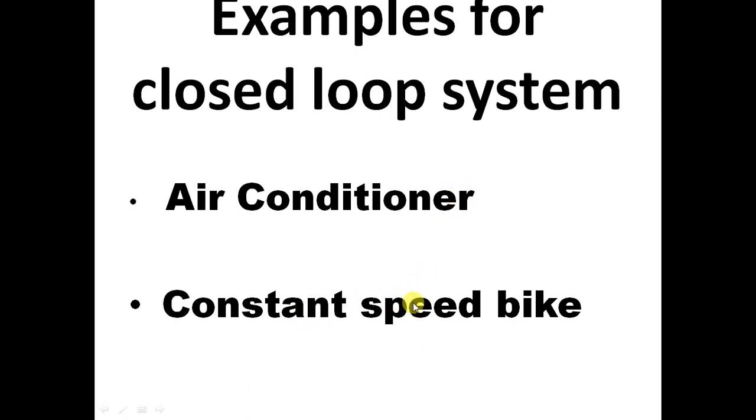Another example, constant speed bike. Father has given a bike to the daughter and told the daughter she should drive at 40 kmph and we assume that she is very sincere and obedient. She tries to maintain a speed of 40 kmph. Whenever speed increases, she will reduce the acceleration. Whenever speed decreases, she will increase the acceleration, such that she drives at constant speed.